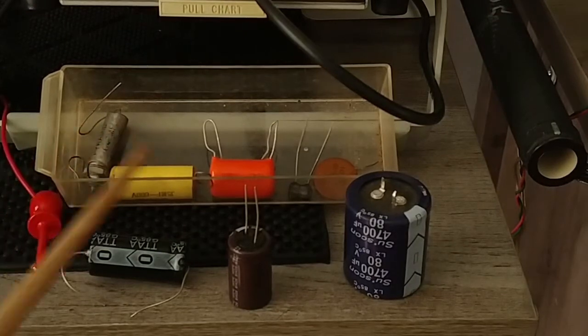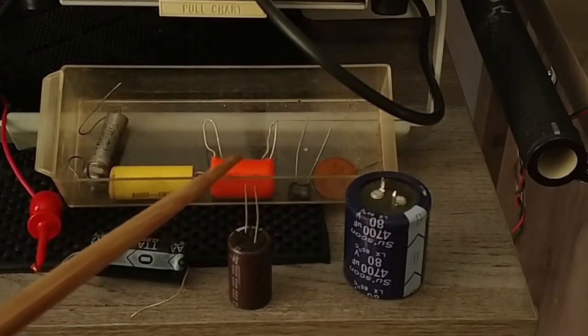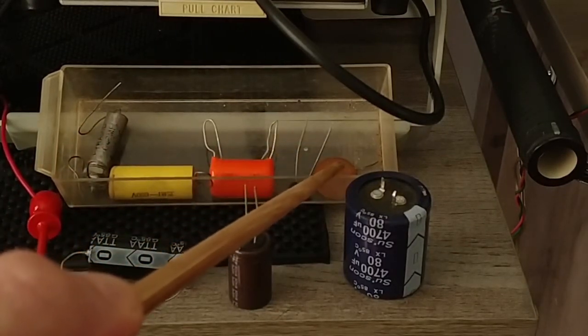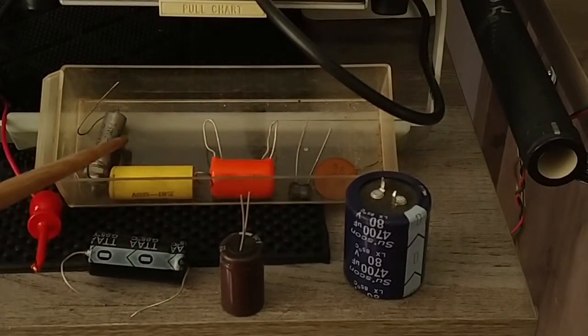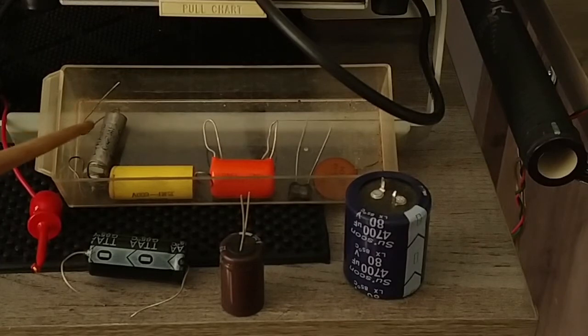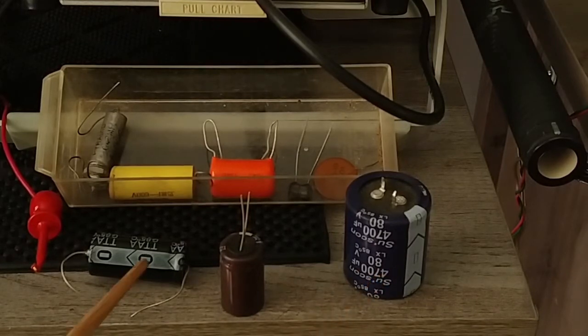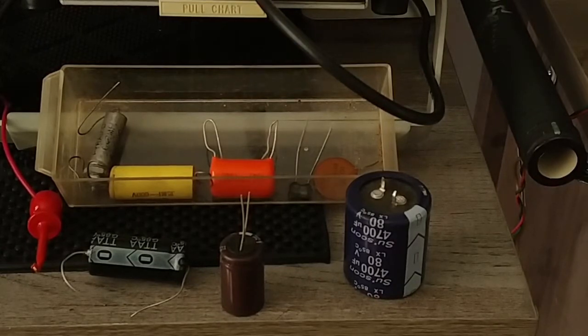Now coupling caps, we see the ubiquitous orange drop, a ceramic disc, a silver mica cap, poly, and this is even a metal mil spec one that you'll sometimes run into. I've seen these on Russian amps. And for down here, these are all electrolytic caps. We have one axial example and two radial examples. We're going to take a look at all these kind of capacitors in circuit, what they do, how they feel, and how we test them. So let's take a deeper dive.